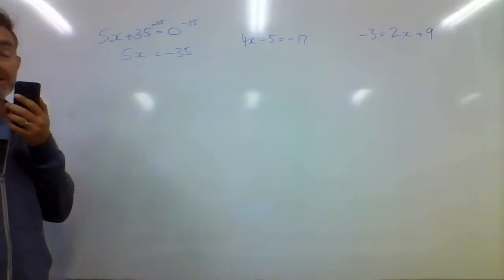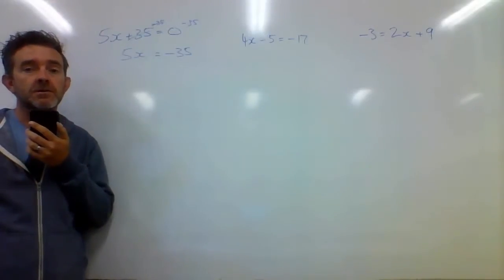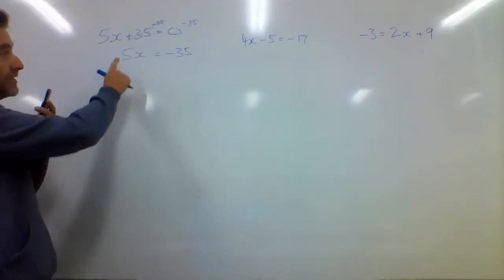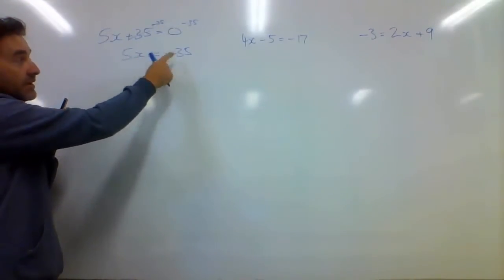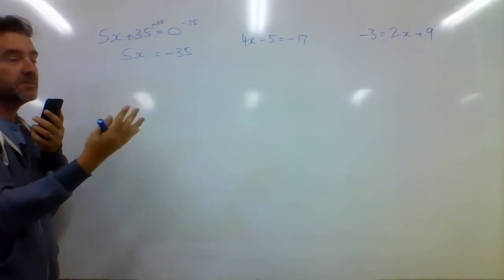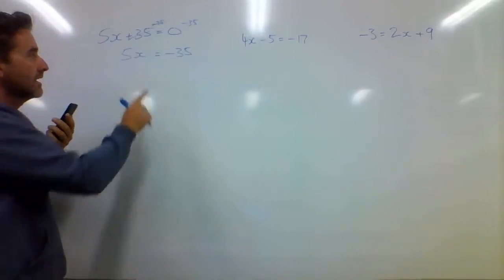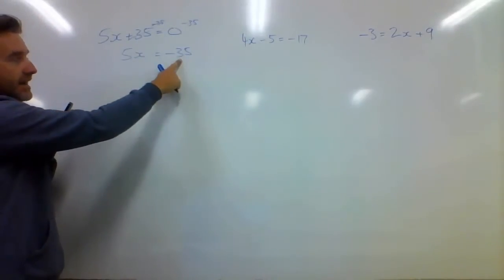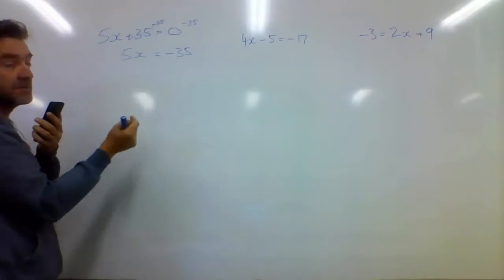Now, if you're good at your times tables, and you should be, you know that 5 goes into 35 seven times. We've got positive 5 here. If it was 5 multiplied by x equals negative 35, we'd expect the x is going to have the value of either plus or minus 7. If it was positive 7, that would have to be positive 35. So this x here must be negative 7.